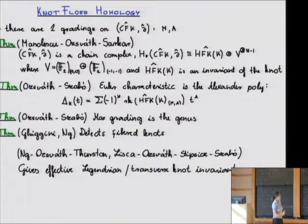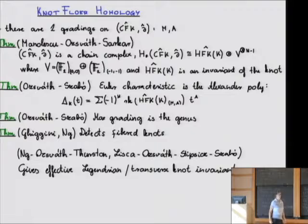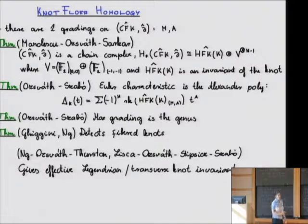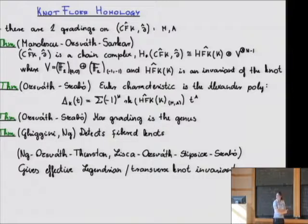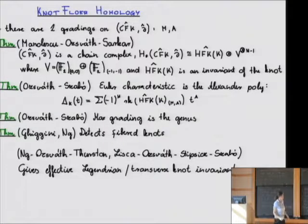It is not quite invariant under stabilization of the grid — it depends on the size of the grid — but you can find an invariant from the whole thing. It is going to be the homology tensored with a two-dimensional graded vector space.